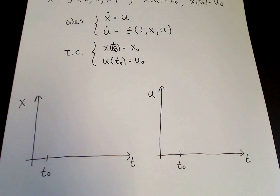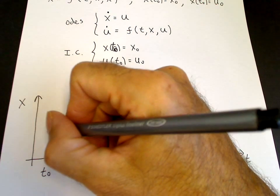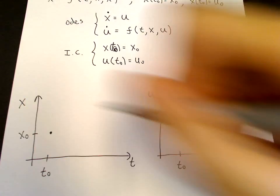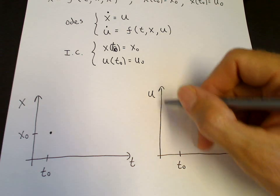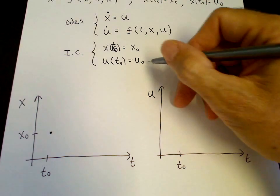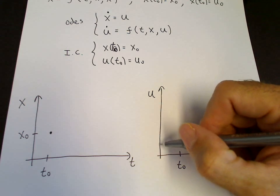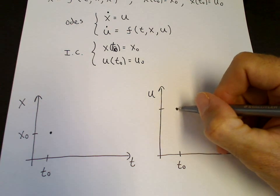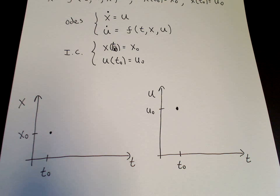So we start at the point t naught. We have, we know the value of x of t naught, that's equal to x naught. It could be positive or negative. For argument we'll take this to be positive. So this is x naught. We know the initial value of u which is x dot. The initial value of u is u naught, which can also be positive or negative. And for sake of argument we'll take it somewhere here to be positive. Those are the initial conditions.